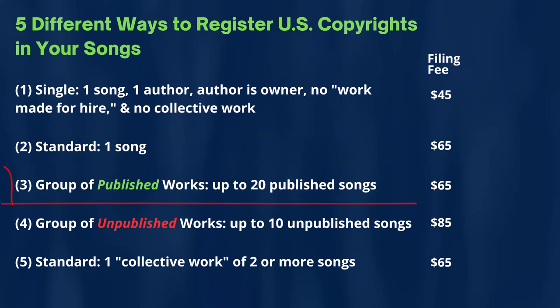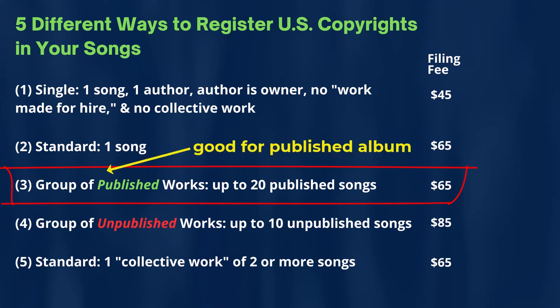The third approach, number three, is what the copyright office typically calls a group of published works. You can file different kinds of published works within that, but we're talking about songs or music. For that particular approach, a group of published works — this would generally be, often if you have released an album, the route you want to go.